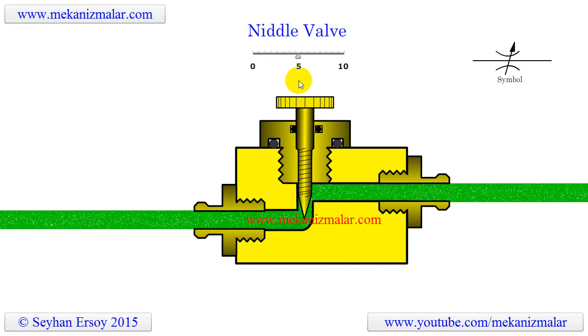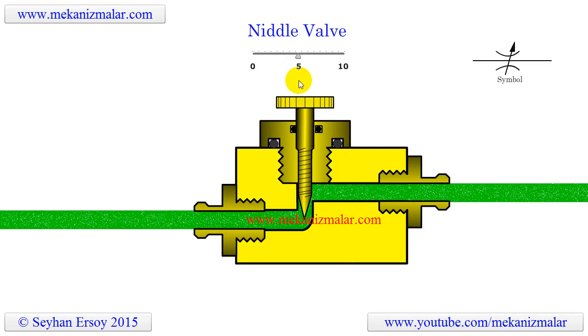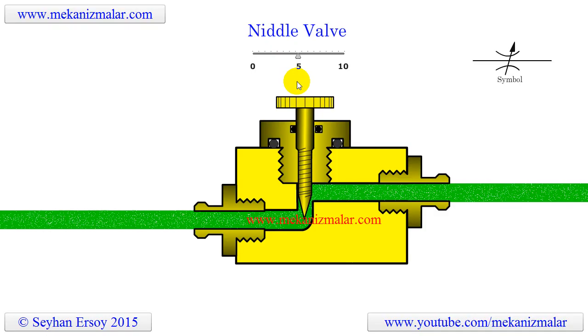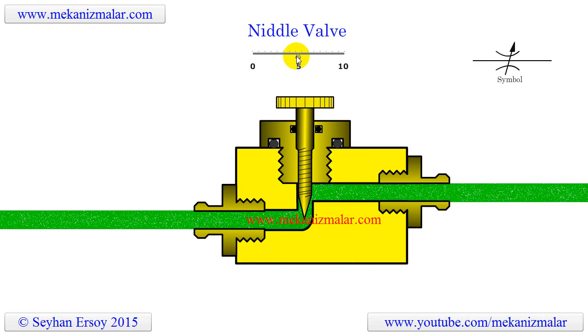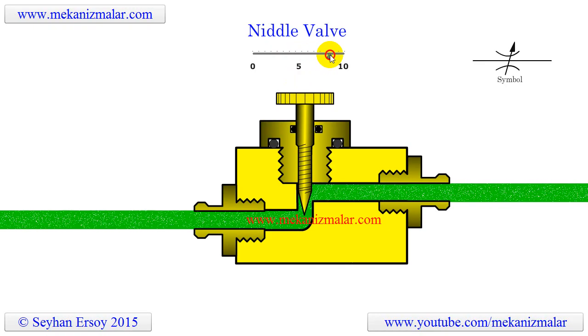In the case of oil, as shown with the greenish color in this animation, the speed of the piston can be controlled more accurately, since oil can be considered an incompressible substance for practical purposes.